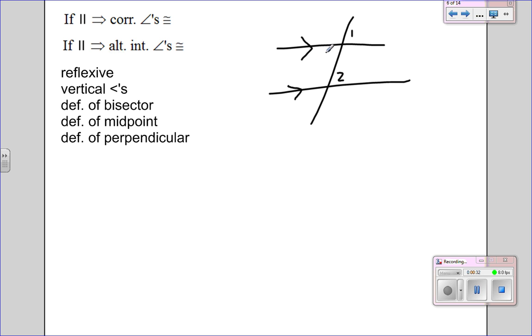If parallel, alternate interior angles—3 and 2 would be an example of alternate interior. A way you can check alternate interior is the Z trick. You can draw a Z along the parallel line and the transversal. And whatever angles the Z makes, those are your alternate interior angles.